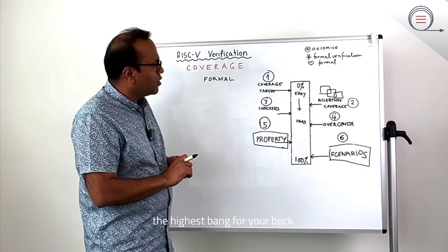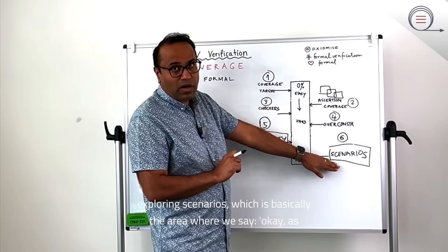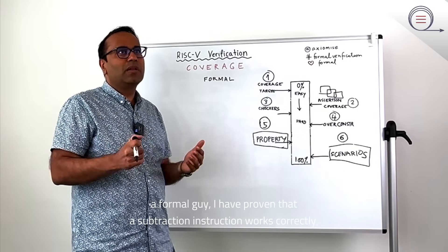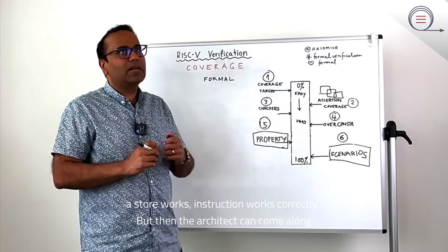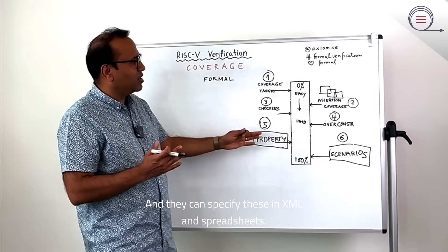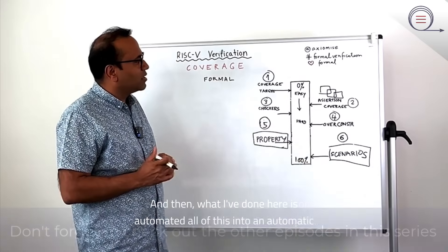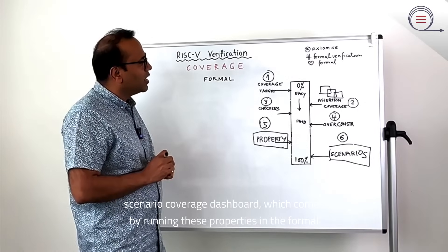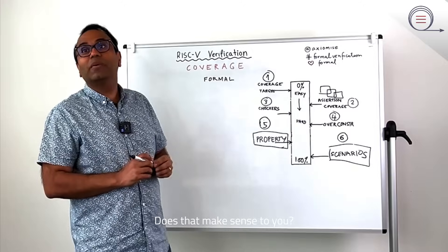But then if you reach this point, you're not quite done until you start exploring scenarios, which is basically the area where we say, okay, as a formal guy, I have proven that a subtraction instruction works correctly, a store word instruction works correctly. But then the architect can come along and say, have you actually investigated a specific interleaving? And they can specify these in XML and spreadsheets. And then what I've done here is automated all of this into an automatic scenario coverage dashboard, which comes by running these properties in the formal tool. So if you're done with all of these six dimensions, then you are done 100%. Does that make sense to you?